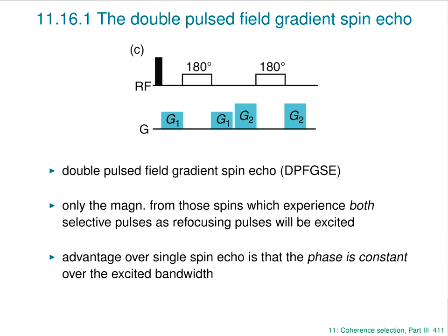This turns out to be an extremely good way of making very clean selective excitation. The only proviso is that the two gradient pairs have to be completely independent — G1 must refocus G1 and G2 must refocus G2. So they have to have very different amplitudes or durations to make sure G1 doesn't end up refocusing G2 or something more complicated.